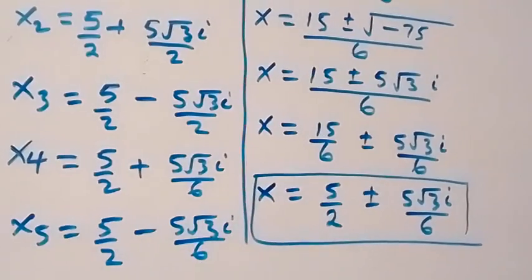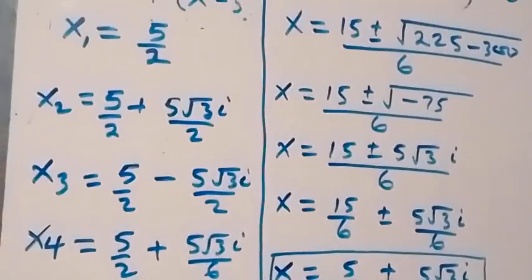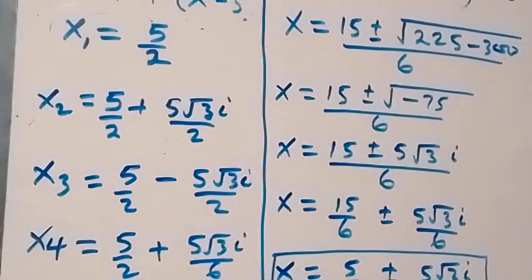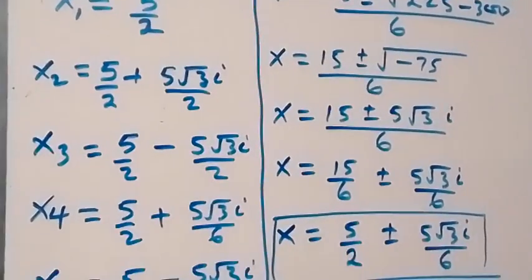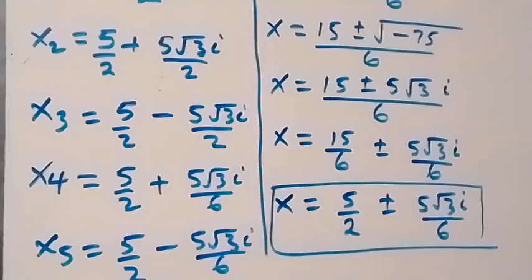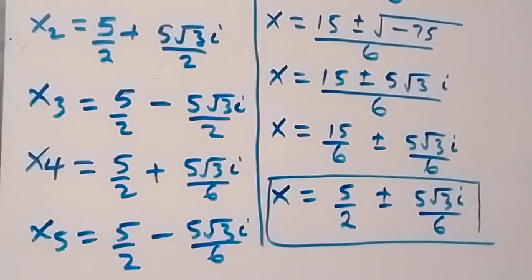So altogether, we have one real solution: x equals 5 over 2, and four other complex solutions. Thank you for watching — don't forget the steps, subscribe to my channel and turn on the notification bell, share this video and give it a thumbs up. If you have another way of solving this, put it in the comment section. See you next class, bye for now.